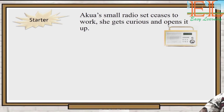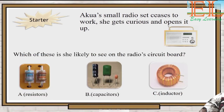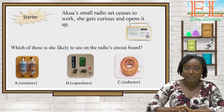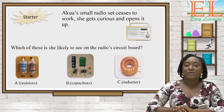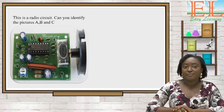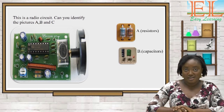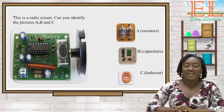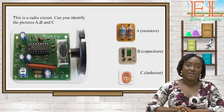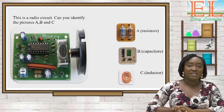She gets curious and opens it up. Which of these is she likely to see on the radio circuit board — is it A: resistors, B: capacitors, or C: inductors? Let's look at a radio circuit board. Can you identify the pictures A, B, and C? Akwea saw all of the components mentioned above on her radio circuit board.